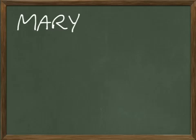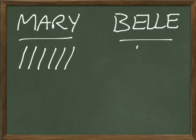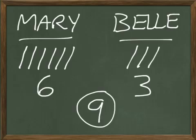Number 5 says: Mary has 6 pens and Belle has 3. How many pens do they both have? Here's Mary and here's Belle. Mary has 6 pens — 1, 2, 3, 4, 5, 6. And Belle has 3 pens — 1, 2, 3. Between the two girls, how many pens do they both have? 6 and 3 are 9.